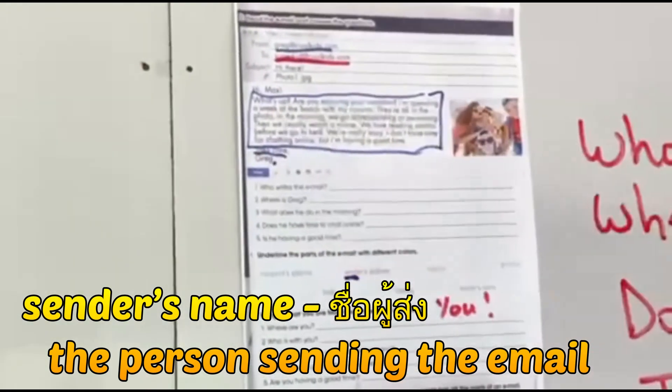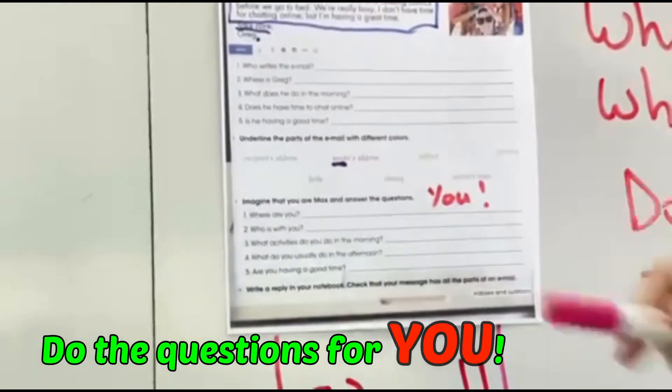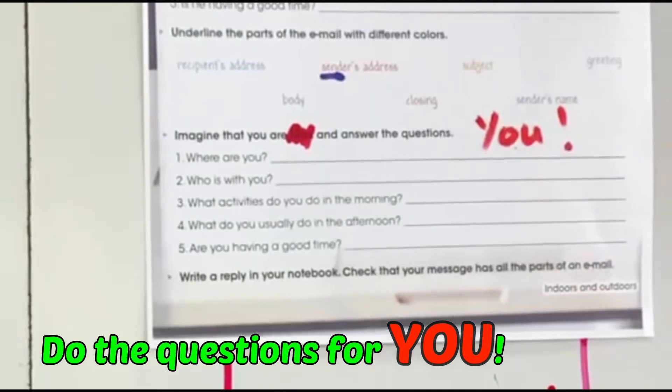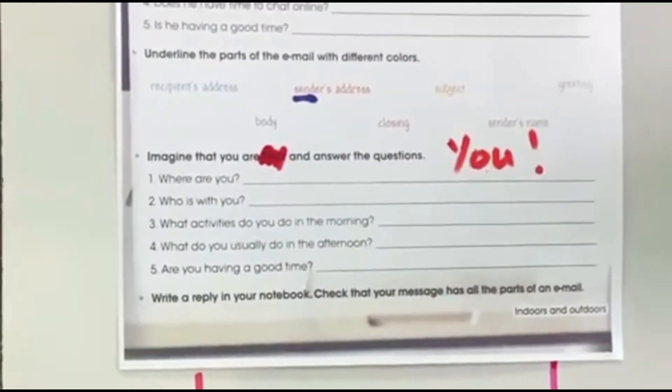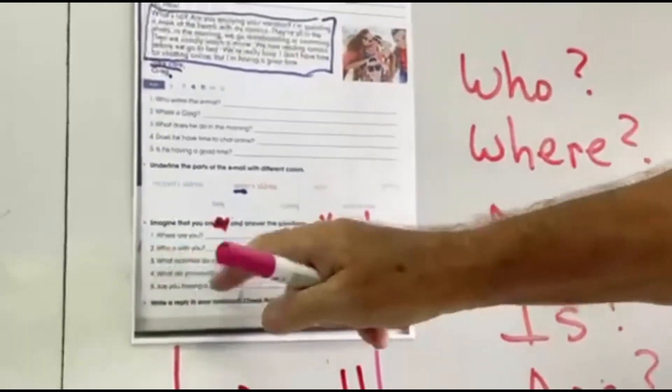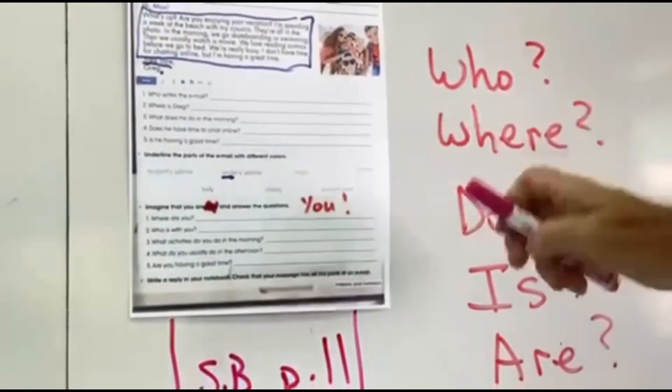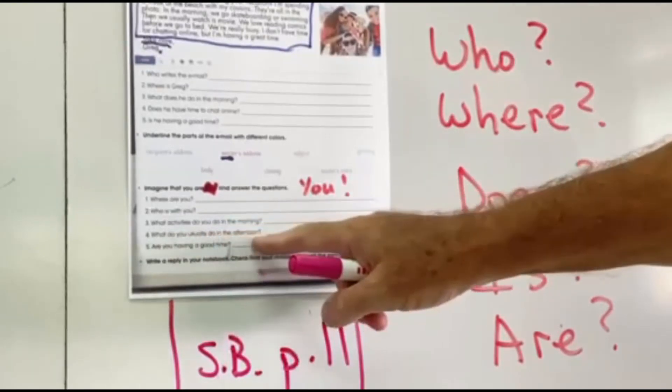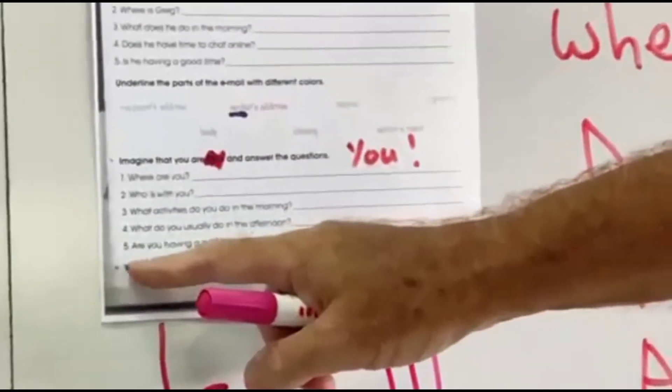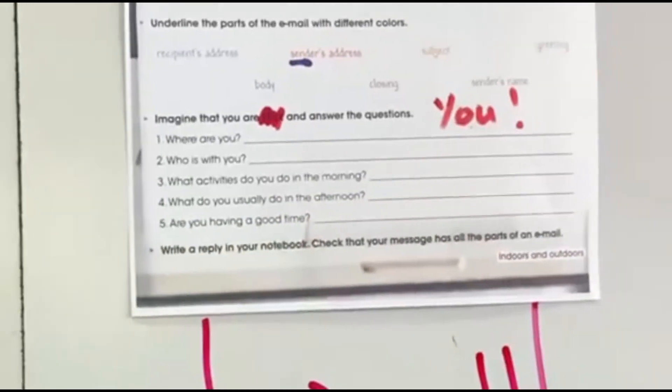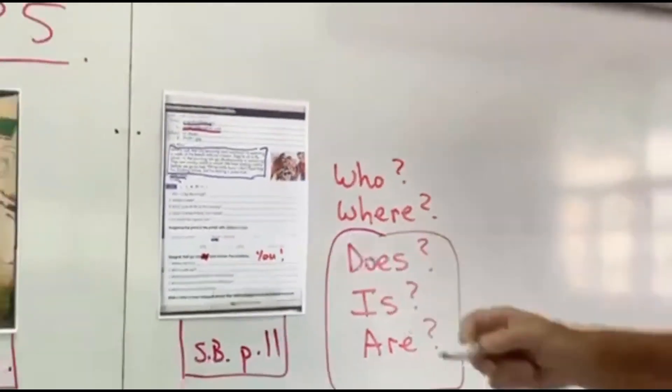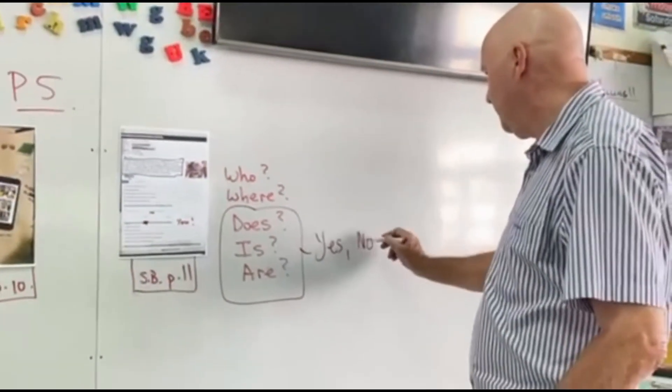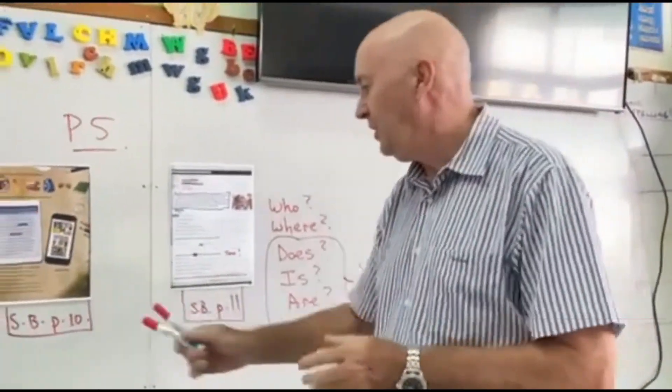And then to finish, do the questions, not for Max, do the questions for you. So where are you? Where, place. Who is with you? Who, person. What things do you do in the morning? What. What do you usually do in the afternoon? And are you having a good time? If the question begins with those, does or is or are, your answer must be yes or no.